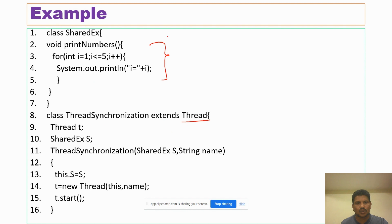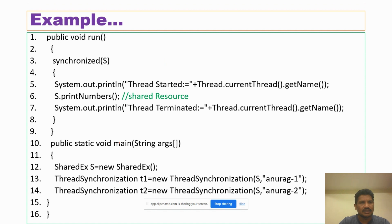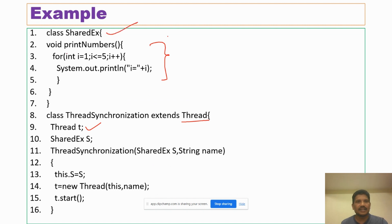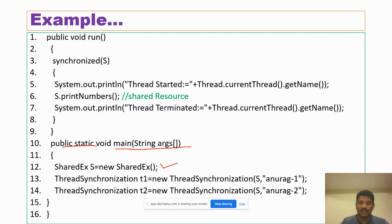Here I create two or more threads by using the Thread class. A reference object has been created. I will move on to the main method. I create an object of the SharedEX class. If you want to access the print number method, you must create an object of this class. Two threads have been created.